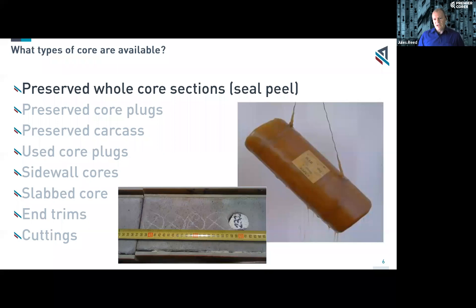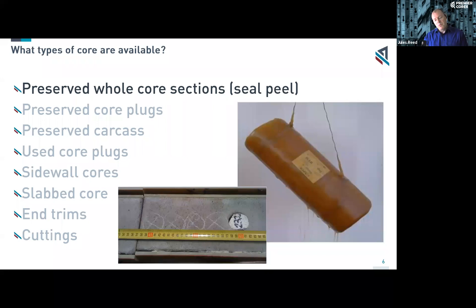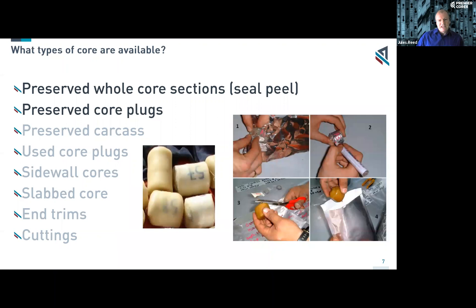Preserved whole core sections and preserved core plugs are very similar. If you have a homogeneous piece of core, you can get several samples from the same piece of rock, each with very similar properties. If you require several analyses on essentially the same rock, a whole core section is excellent material to use. The picture shows wax preservation — the wax seals the core off from the atmosphere, preventing evaporation of fluids inside, so that when you open that sample after 20 or 30 years, what was inside has been preserved.